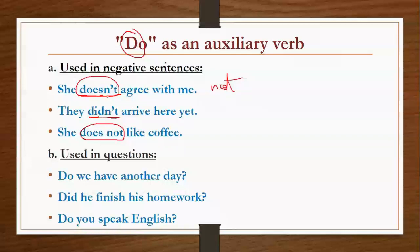These are the uses of the verb 'do'. We can also use 'do' in question form. For example: 'Do we have another day?', 'Did he finish his homework?', 'Do you speak English?' — so do, did, does are all uses of 'do'.